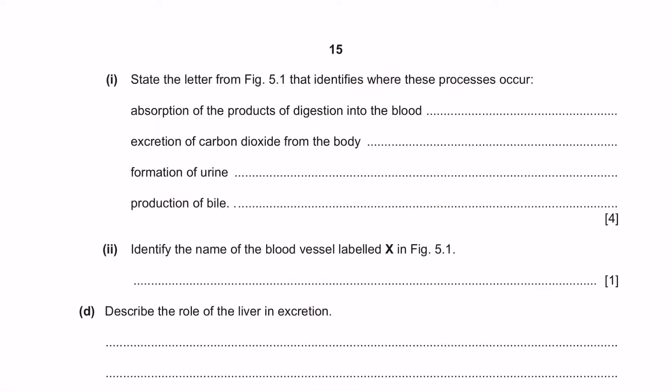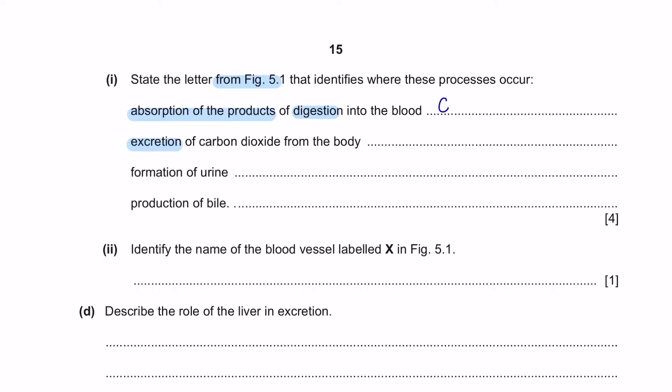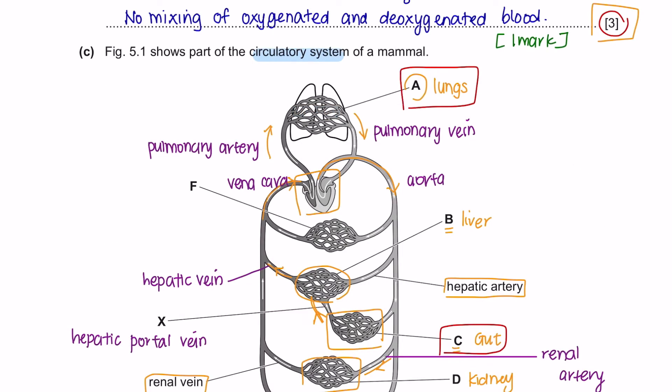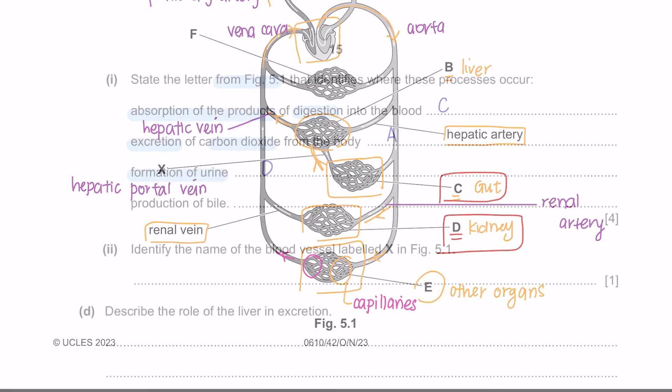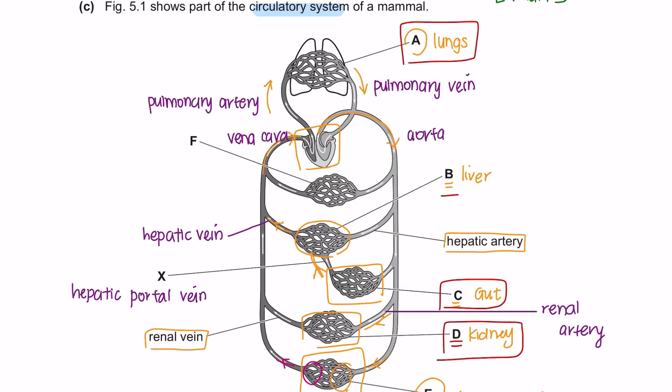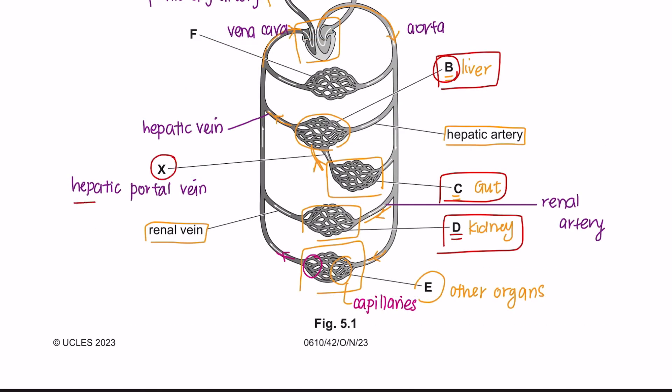Part 1, state the letter from figure 5.1 that identifies where these processes occur. Absorption of the products of digestion into the blood happens in the gut, so that would be C. The excretion of carbon dioxide from the body. Carbon dioxide is released from the lungs which is part A. Formation of urine happens in the kidney which is part D. And lastly, the production of bile. Bile is produced and secreted in the liver which is part B. Part 2, identify the name of the blood vessel labelled X in figure 5.1. The blood vessel labelled X is the hepatic portal vein which moves from the gut into the liver.